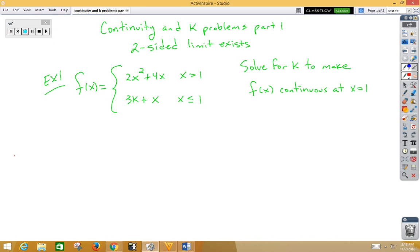In Example 1, we want to solve for k to make f of x continuous at x is 1. Notice that this piecewise function is defined at x is 1 to the right of x is 1 one way, and to the left, it's defined another way.